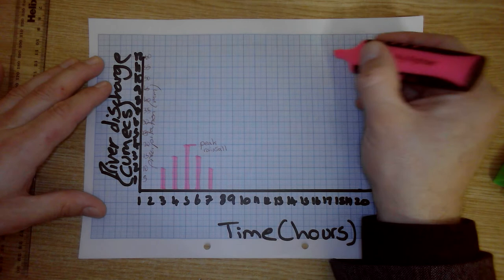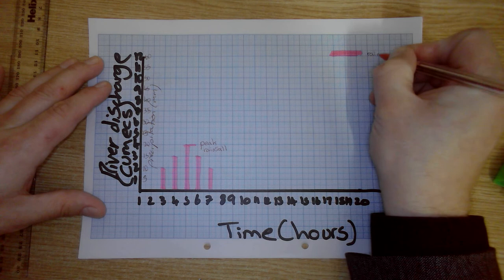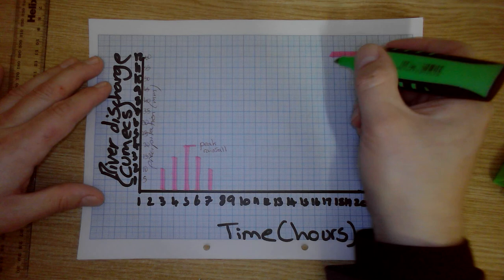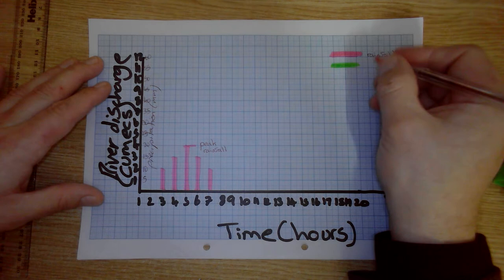So, if I do a little key up here as well, this might help you. So, that is rainfall or precipitation. Alright? So, now, we need two rivers. So, we're going to have a river in an urban area. We'll have that in green. So, that's the one we'll start with, urban.